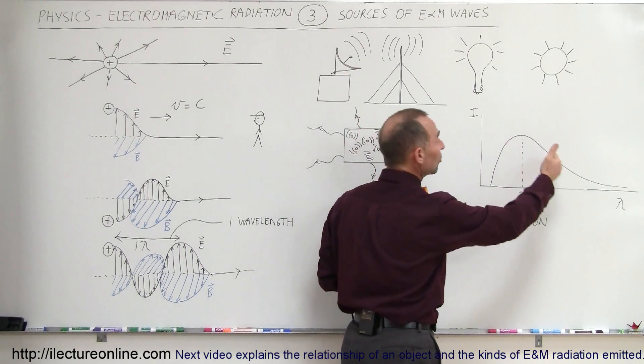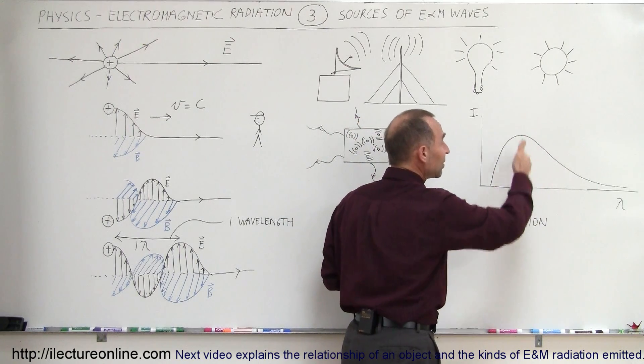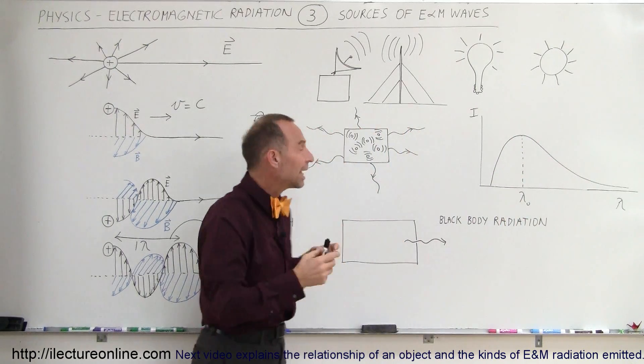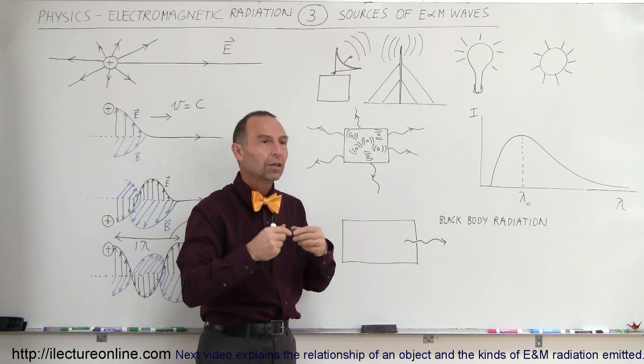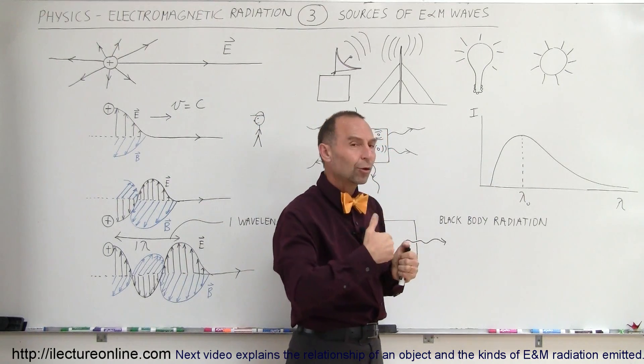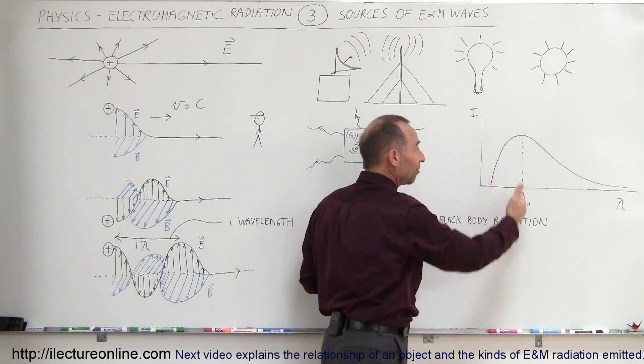Here I try to draw what that frequency distribution looks like. This is called a black body radiation curve. Notice that at some frequency, the most, well I shouldn't say the most, but the frequency that occurs the most will be at a particular wavelength.